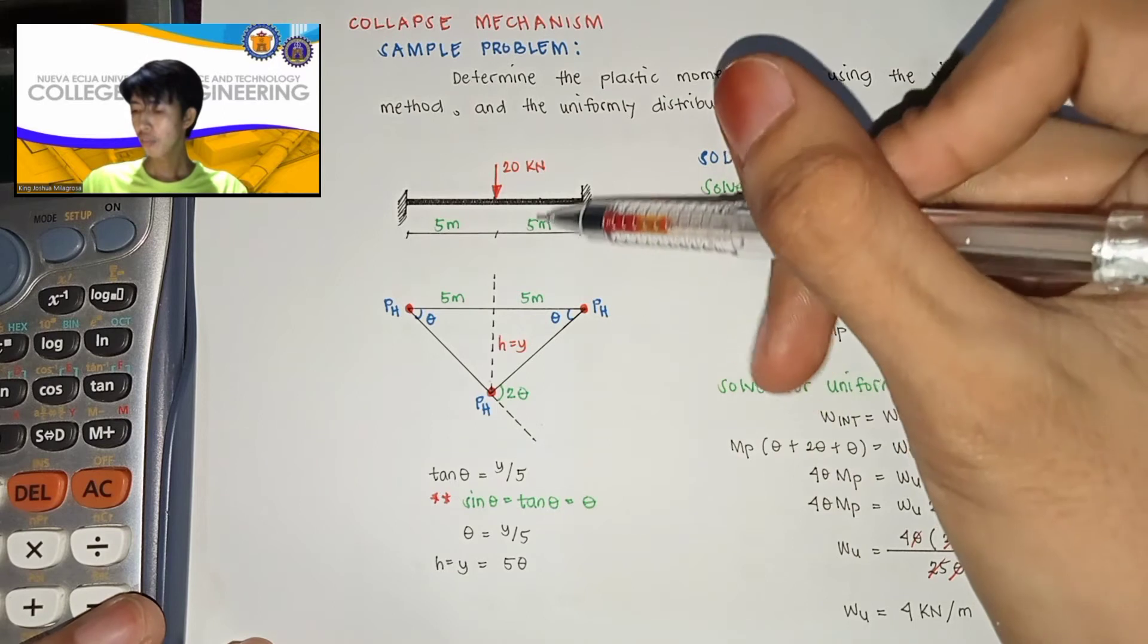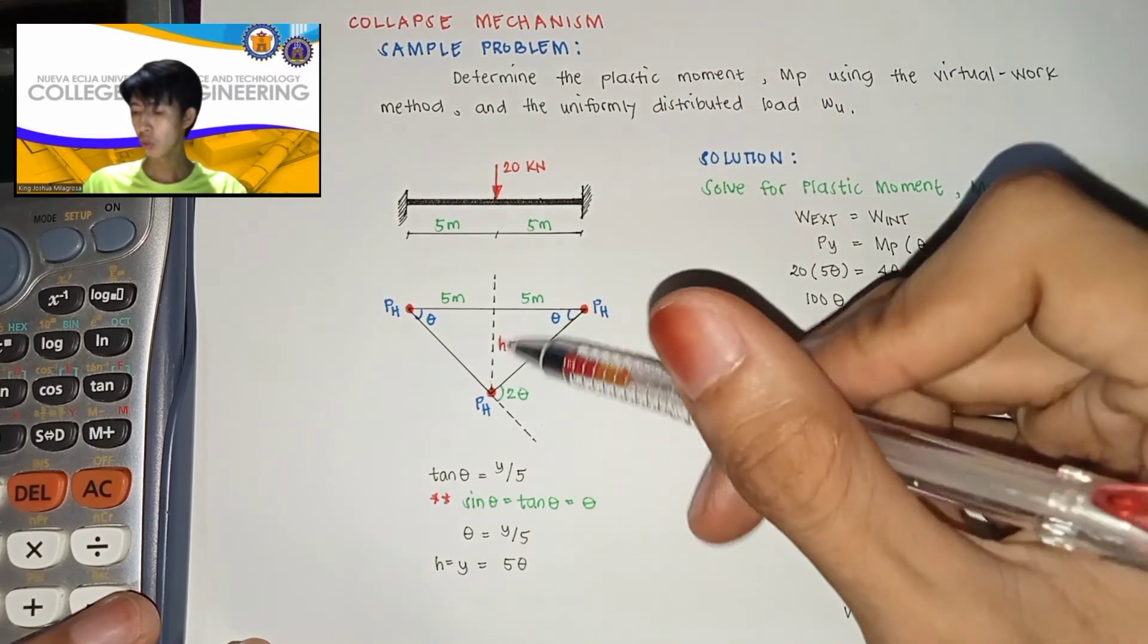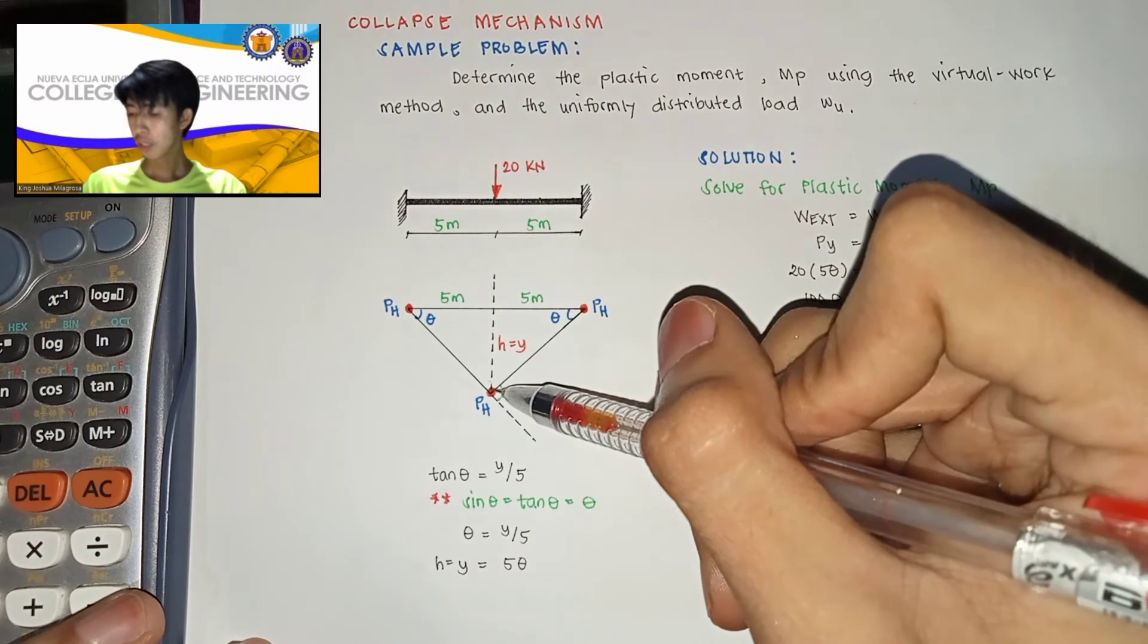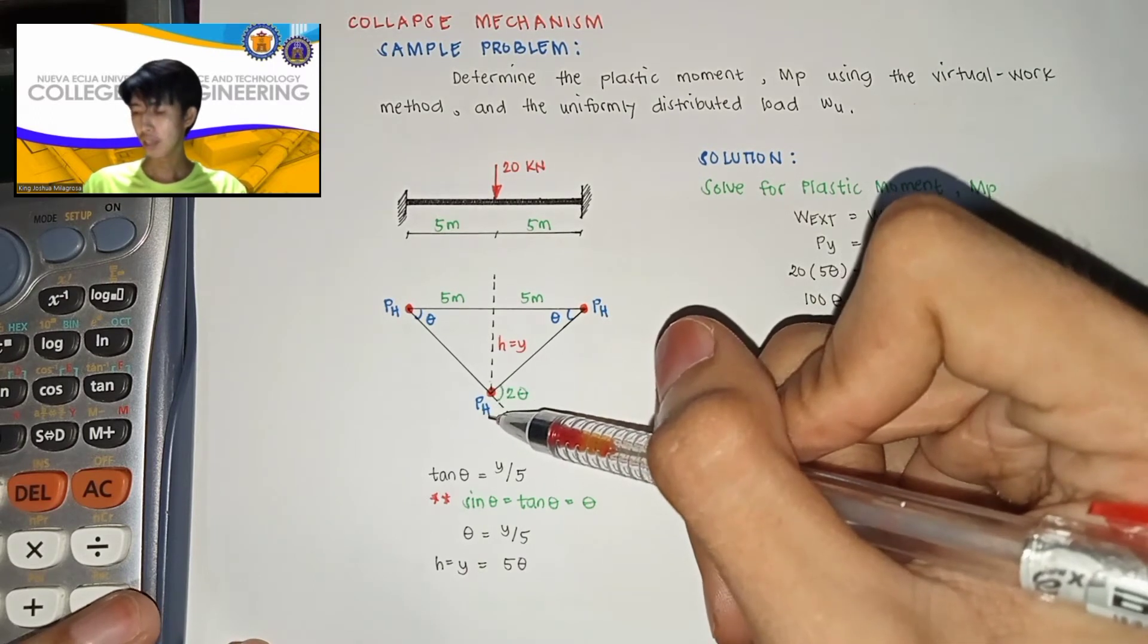Then kapag nag-deflect naman siya, yung displacement sa gitna, ang magiging point din nyan is plastic hinge.